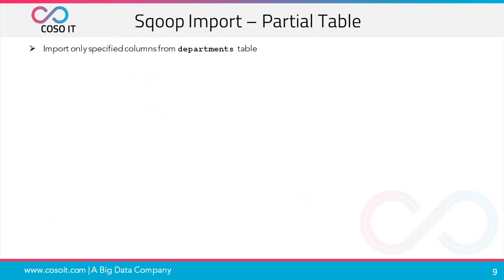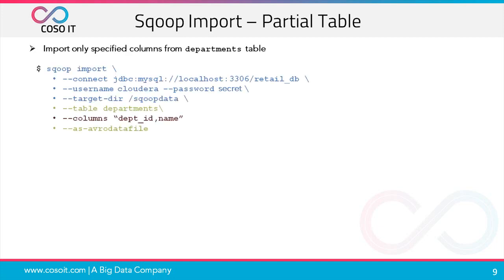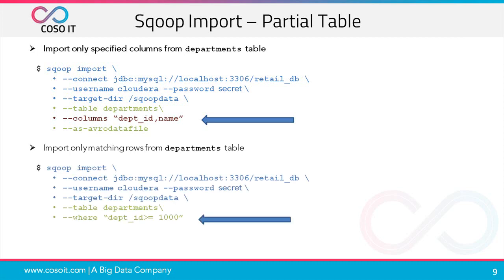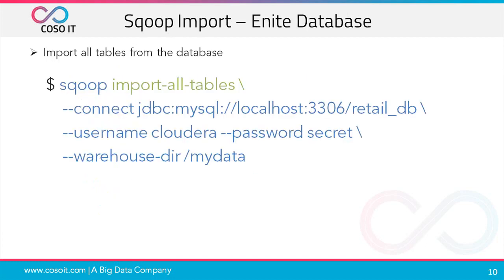There are some more variations of the Sqoop import command. If you want to import only specific columns from the departments table, you will use the --columns parameter and specify the column names. For importing only matching rows from the departments table, you will specify the --where parameter and provide the condition. You can also import the entire database using Sqoop; instead of sqoop import you will use sqoop import-all-tables and also specify the location of the warehouse directory. One important point to note is that while importing tables, each table must have a single-column primary key.